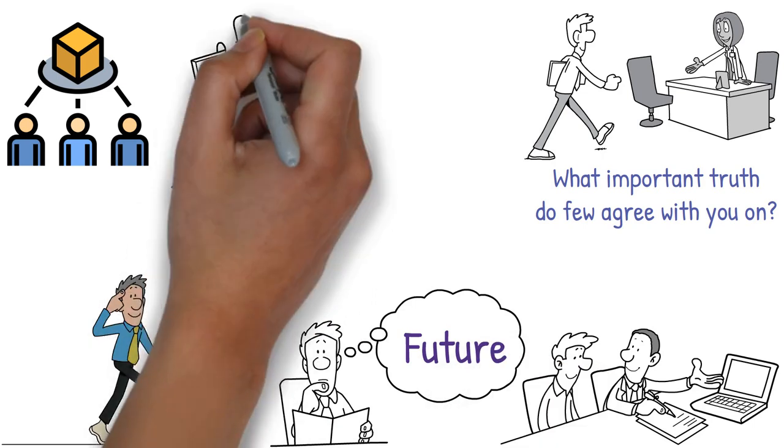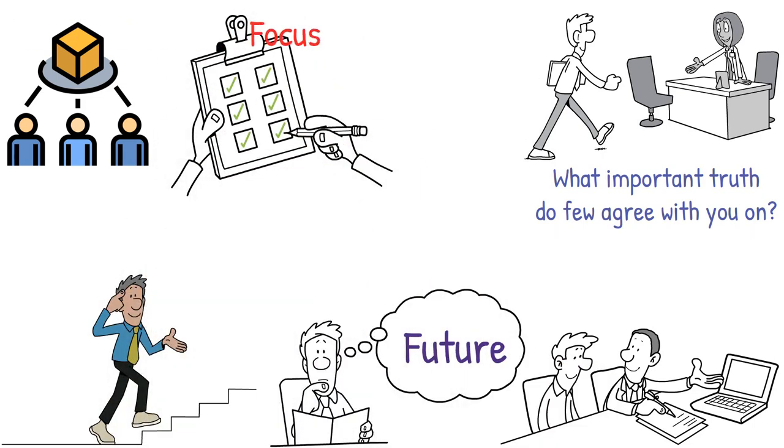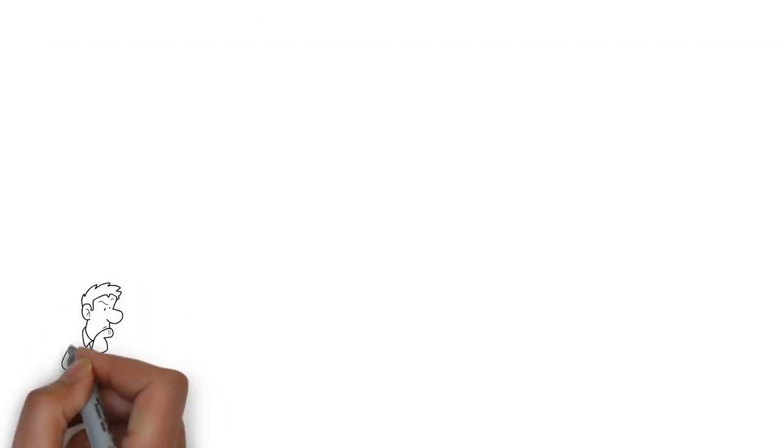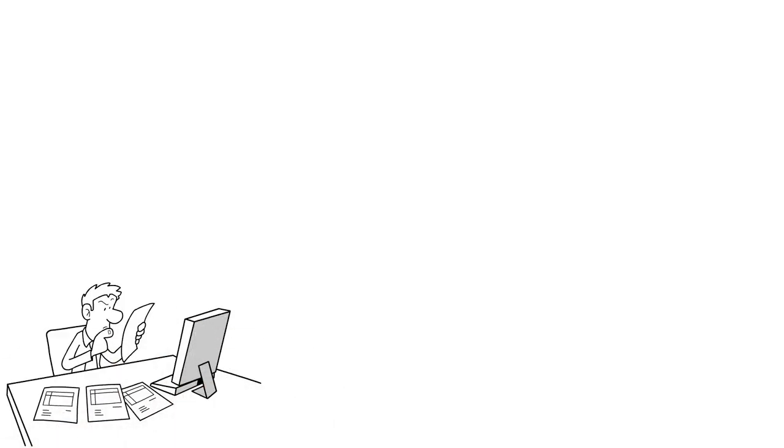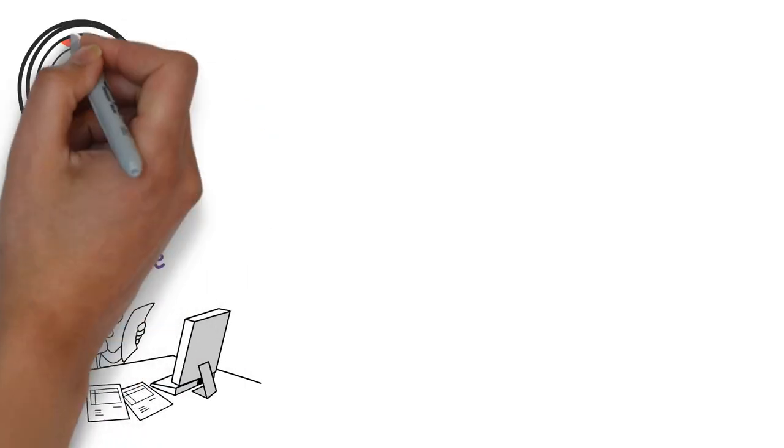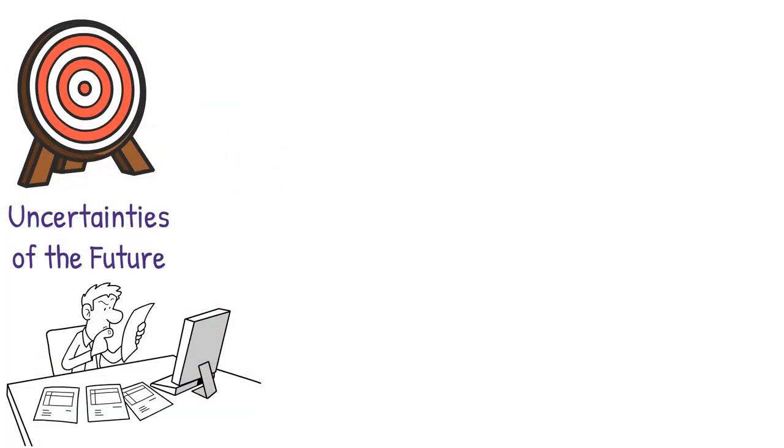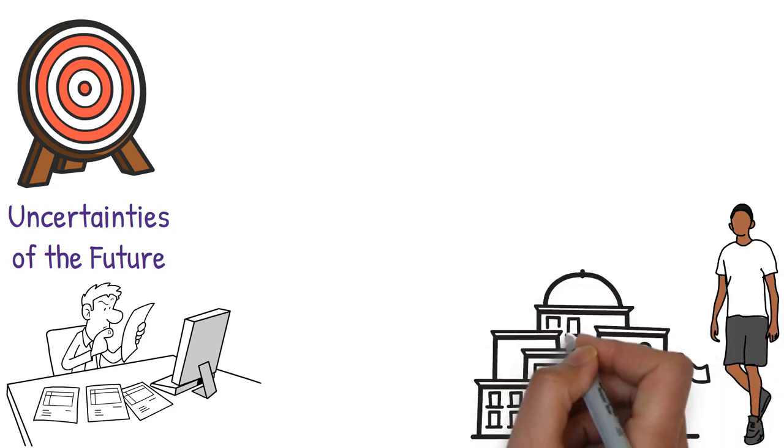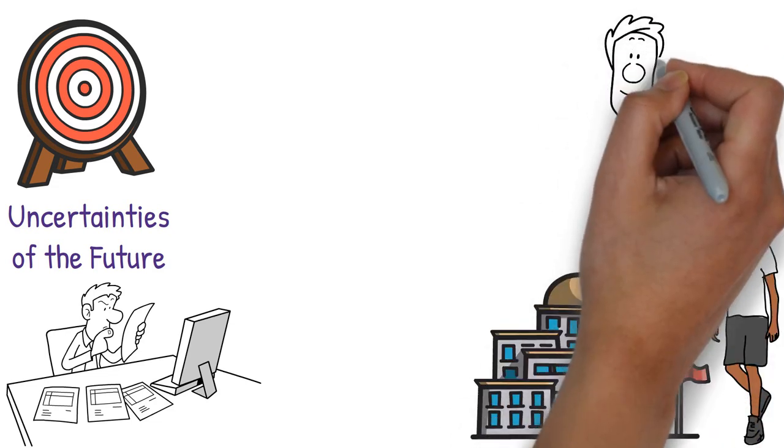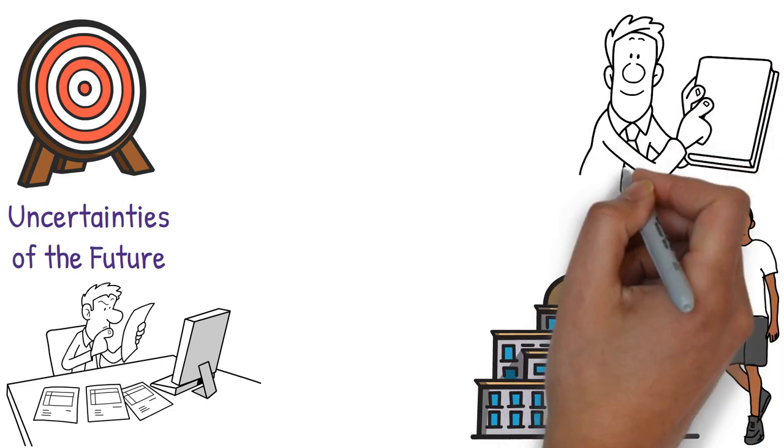After analyzing potential futures, the key is focus. While many prepare for numerous outcomes, it's often futile due to the vast uncertainties of the future. Instead, targeting the optimal future for you is wiser. For instance, students often juggle multiple activities to impress top universities, but mastering a single subject might be more advantageous.